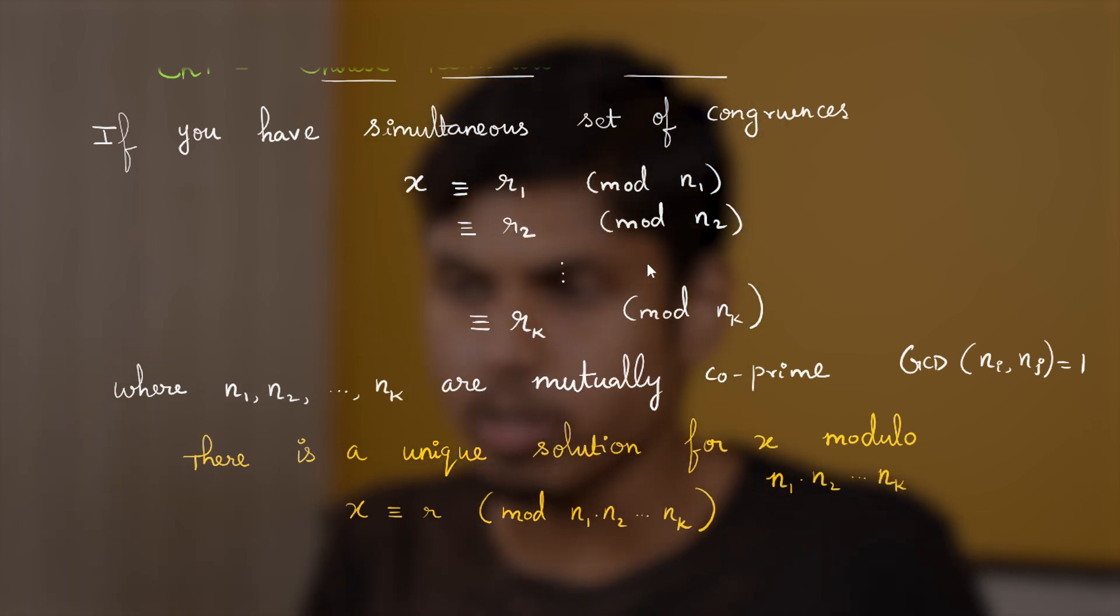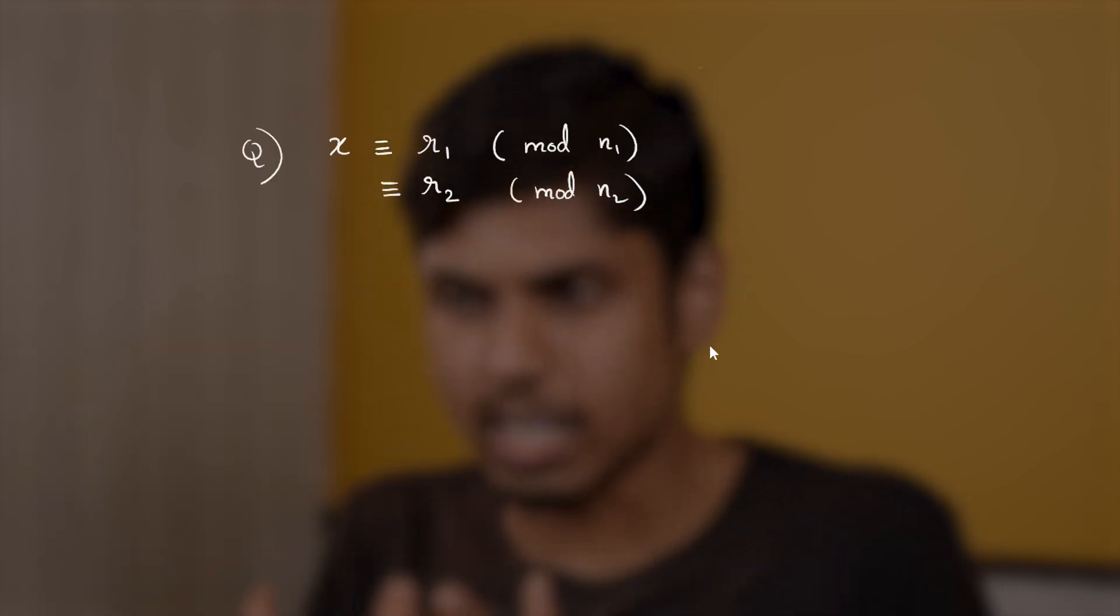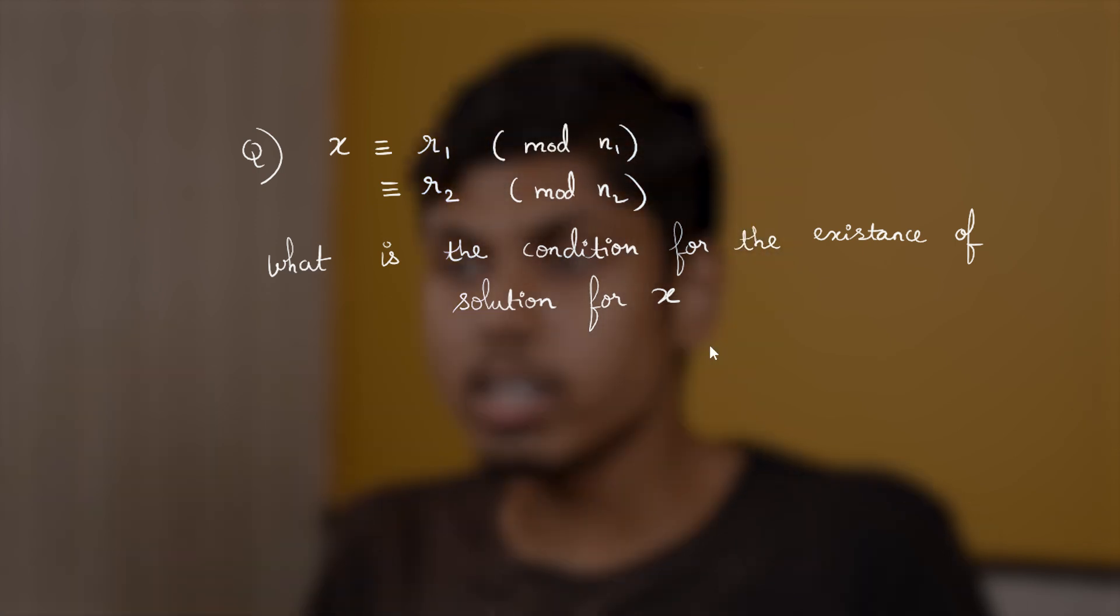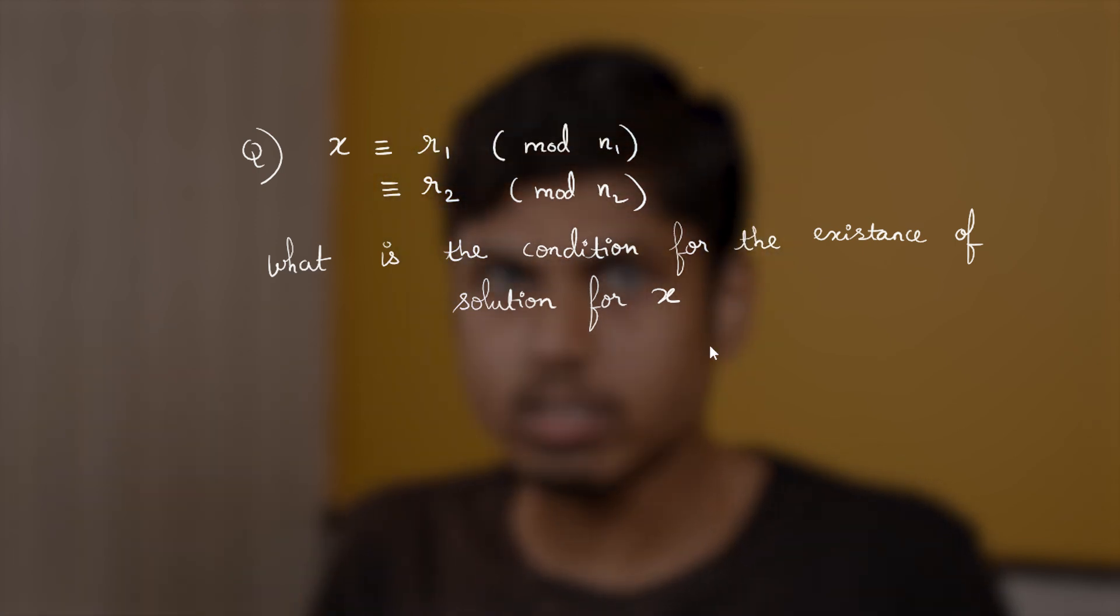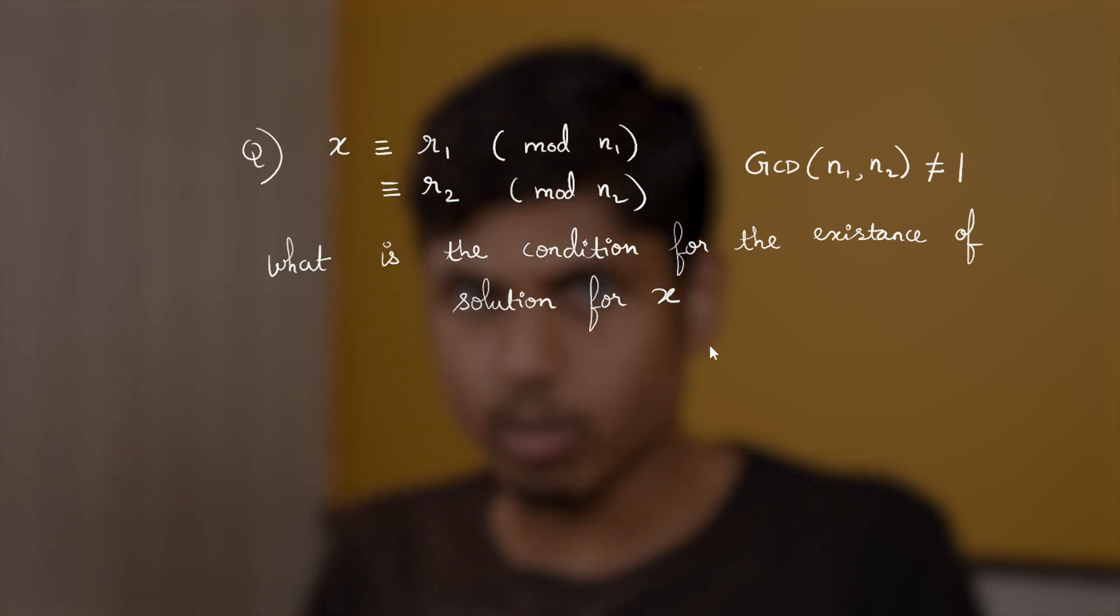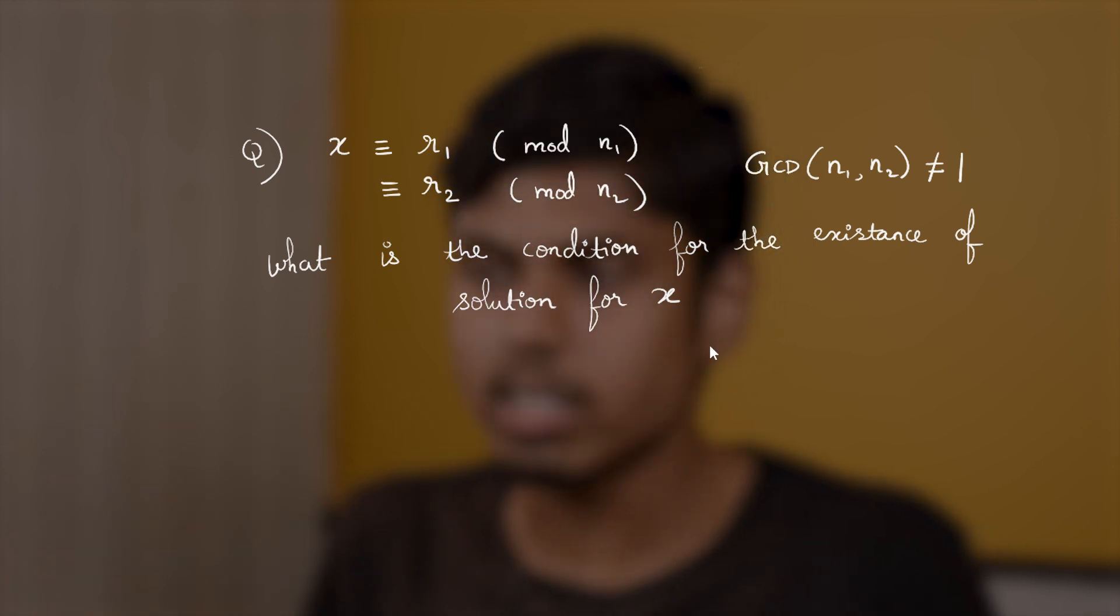So let me quickly give you a motivational question based on the Chinese remainder theorem. It's like an extension of it. So students of my class are also pondering about this question. What if you have two congruences? Congruent to R1 modulo N1 and congruent to R2 modulo N2. If X satisfies these two simultaneous set of congruences. What is the condition for the existence of solution for X? It turns out that in some cases of N1 and N2, there might not exist a solution. And do remember that here we are talking about the condition in which GCD of N1 and N2 is not equal to 1. This is not necessarily 1. We have considered the case of equal to 1. Let's assume that it's not equal to 1 here.